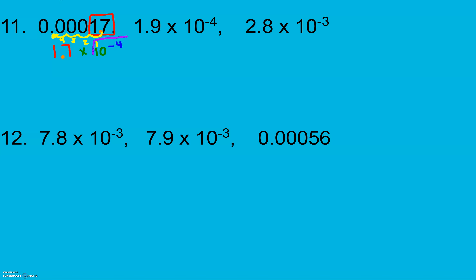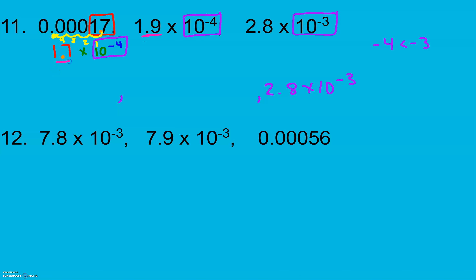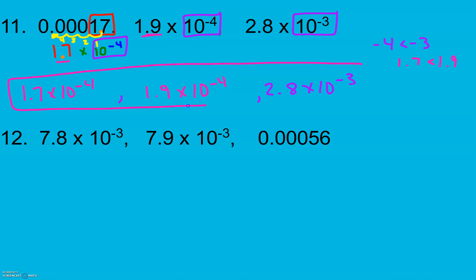Now to compare, I check my exponential parts first. Negative 4 is less than negative 3, which means 2.8 times 10 to the negative 3rd is going to be my biggest, and my 10 to the negative 4ths are going to be my smallest. Now comparing my decimal parts — 1.7 and 1.9 — 1.7 is less than 1.9, so 1.7 times 10 to the negative 4th is smallest, then 1.9 times 10 to the negative 4th, and finally 2.8 times 10 to the negative 3rd. That's because that exponent is biggest, which means it's multiplied by an extra 10.